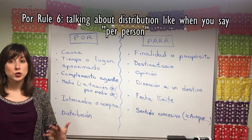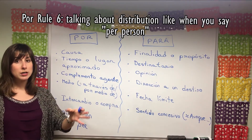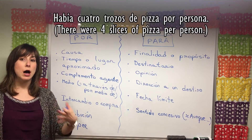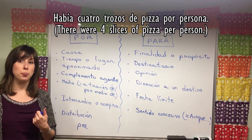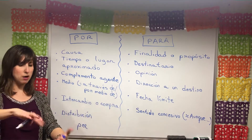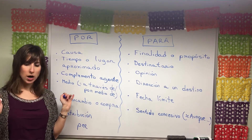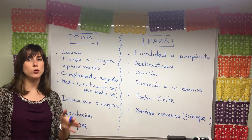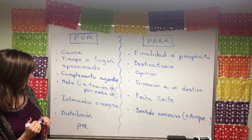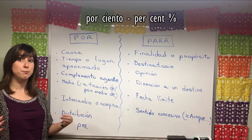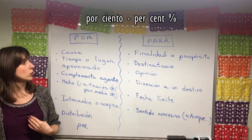The last main use of por is distribution — like the word 'per' in English. 'Cuatro trozos de pizza por persona' — four slices of pizza per person. Or 'Tocamos a cuatro galletas por persona' — four cookies per person. We're distributing things. Also, when saying percent, we use 'por ciento' — because that's another way of distributing things.